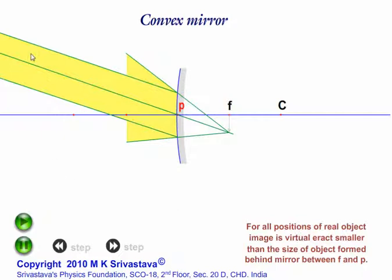The first standard position is where the object is at infinity and the light rays coming from the object are parallel. A virtual image is formed in the focal plane of the mirror.